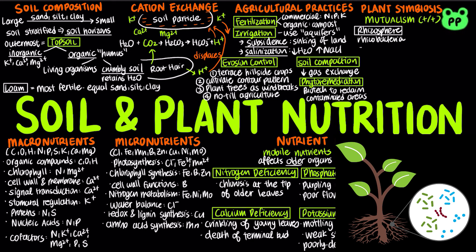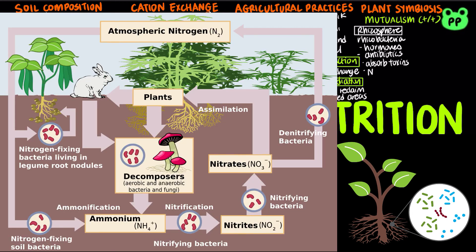Rhizobacteria can produce hormones that stimulate plant growth, antibiotics that protect roots from disease, absorb toxic metals, and play an important role in the nitrogen cycle, such as in the mutualistic relationship between legumes and rhizobacteria, which fixes atmospheric nitrogen into ammonium ion and nitrate that are usable by plants.